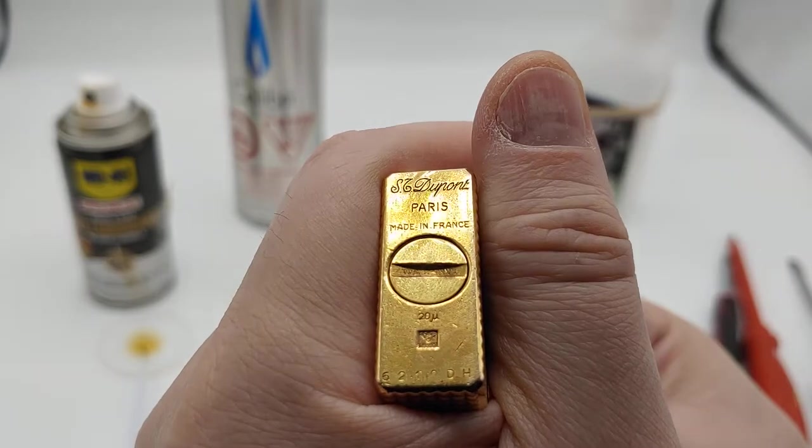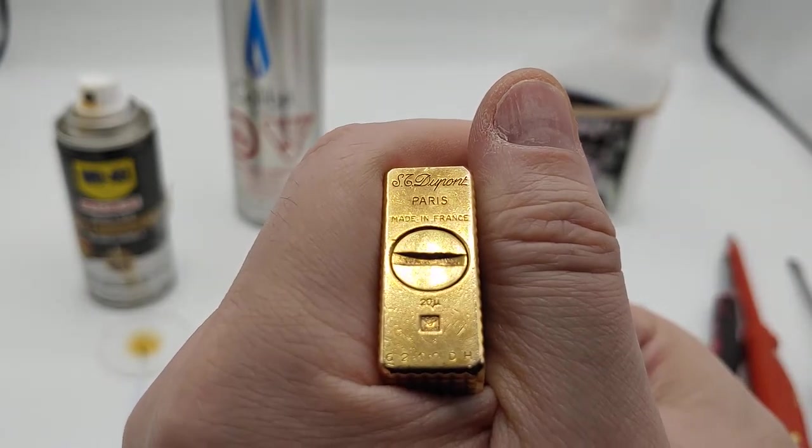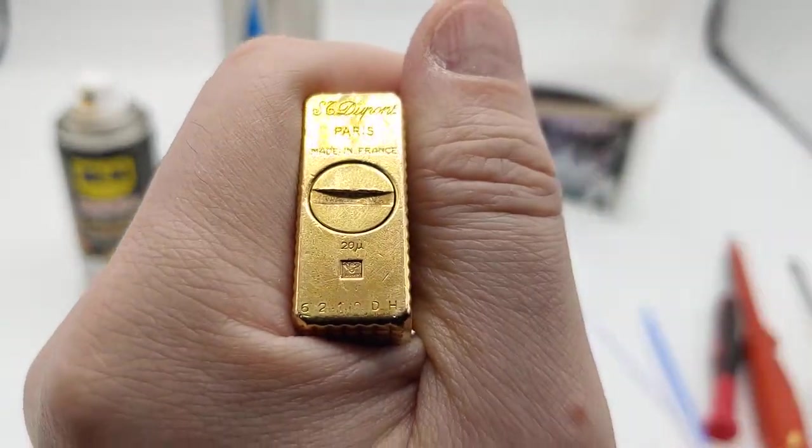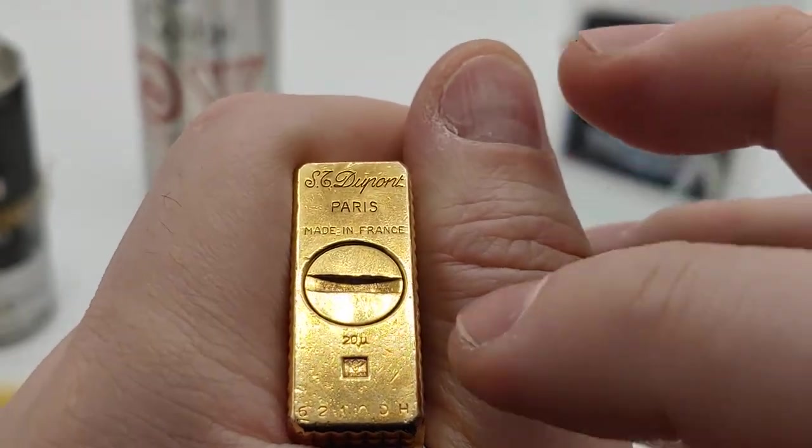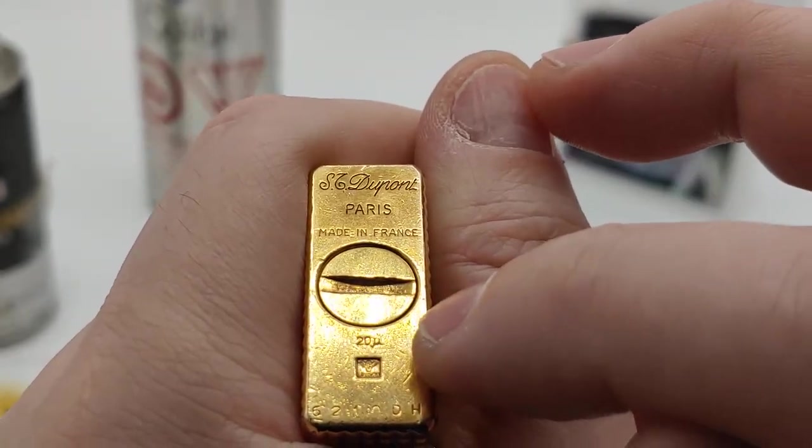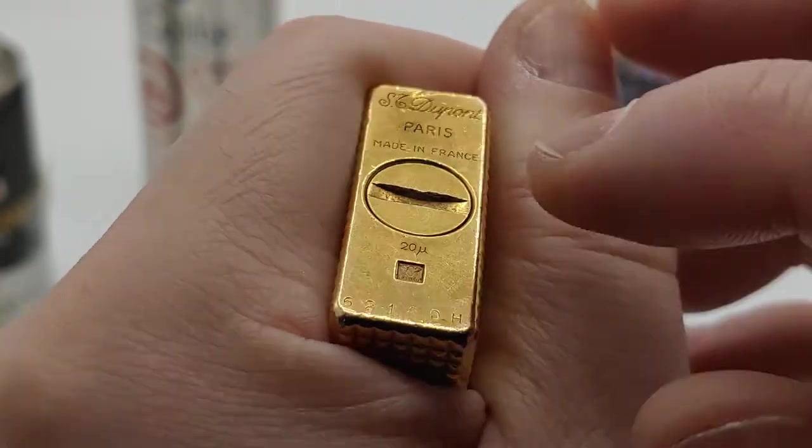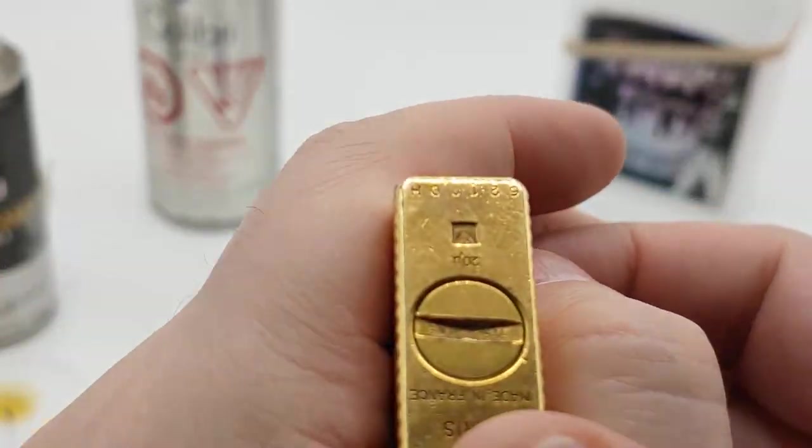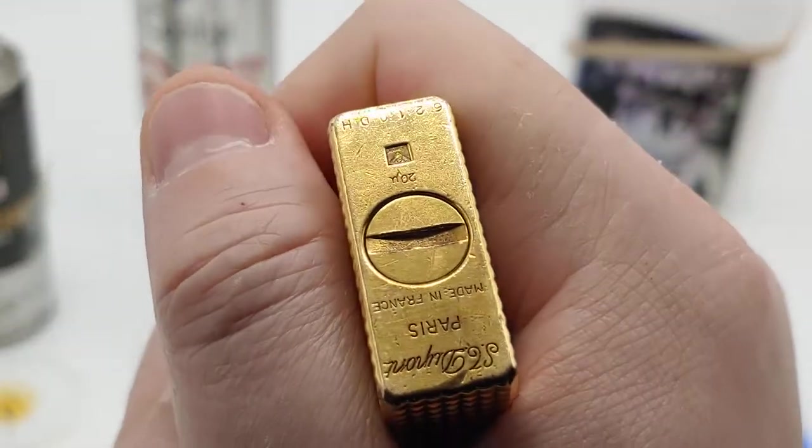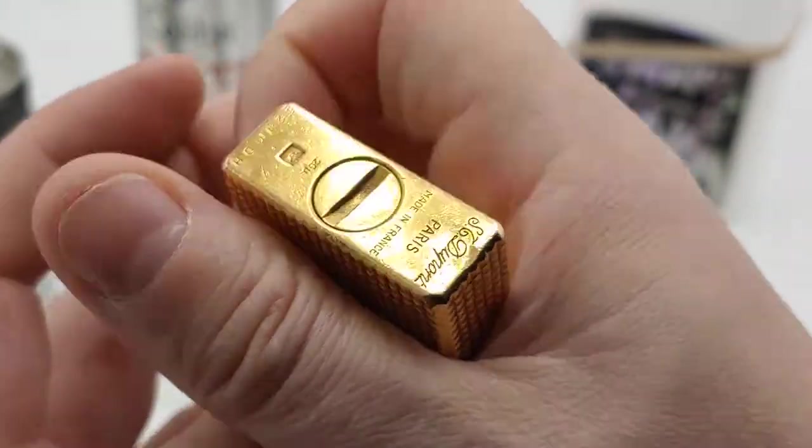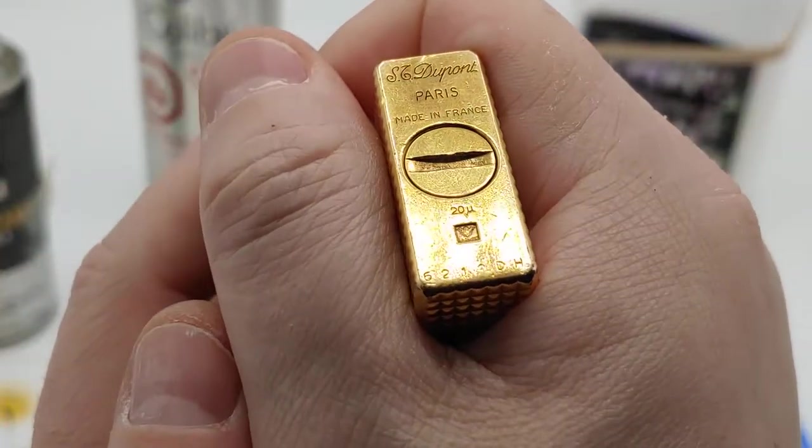The lighter itself is made in France, Paris specifically. And this is a gold-plated lighter. It's 18 karat gold-plated. 20 microns is the level of plating. These were made back in the 70s, I believe. So this could be an early 70s model.